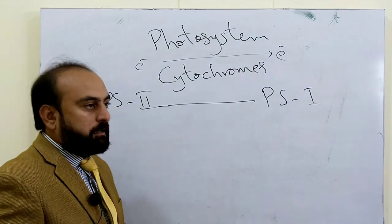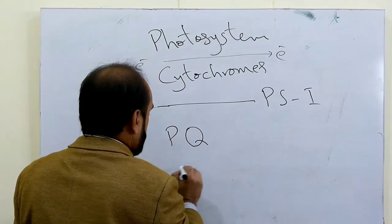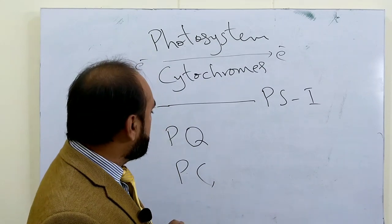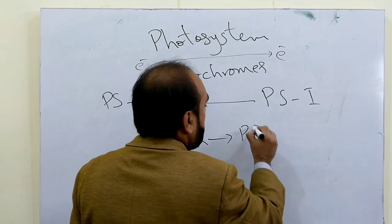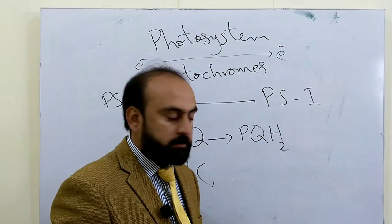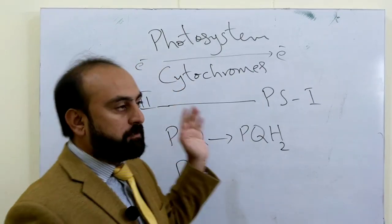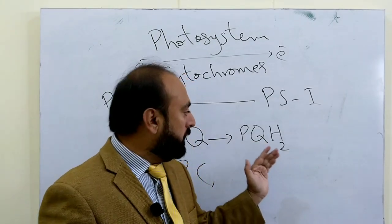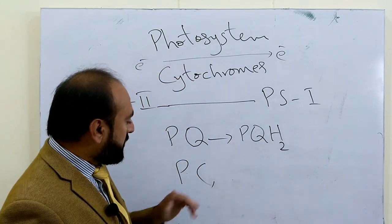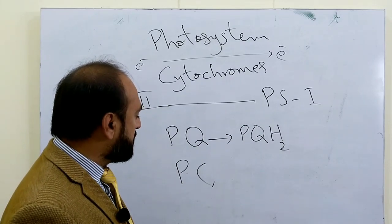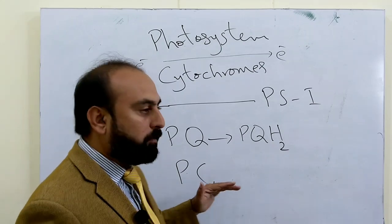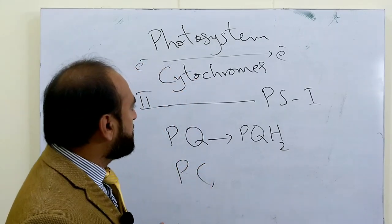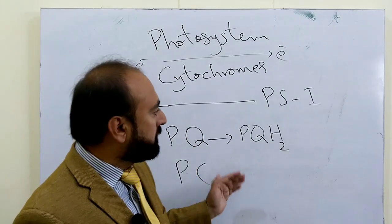The other electron carriers are plastoquinone and plastocyanin. These are relatively mobile, unlike cytochromes. When plastoquinone receives an electron it is converted into PQH2 and moves to the cytochrome b6f complex, where it is oxidized, releasing its electrons to the cytochrome b6f complex. During this process it also moves protons from the stroma to the lumen side. Plastocyanin is a small protein which contains a copper atom that can hold electrons, so it is also a mobile carrier which moves over short distances, taking electrons from the cytochrome b6f complex and delivering them to photosystem 1.